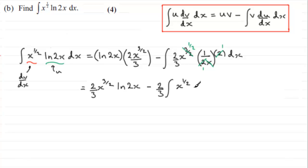So again, we just write the first term in: we've got two thirds x to the power three over two multiplied by the natural log of 2x. When it comes to integrating this, we've got minus two thirds at the front here.